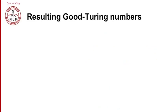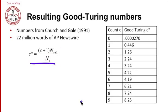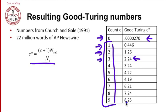Let's look at the resulting Good Turing numbers from a Church and Gale experiment using 22 million words of AP Newswire. The equation is C* = (C+1) × N_{C+1} / N_C. Zeros are replaced by a small probability from N_1. Ones become 0.446, count-2 things become 1.26, count-3 things become 2.24, and so on. Each original count has been discounted downward to leave room for the zero-count items. Notice the general relationship between each original count C and the discounted count C*.